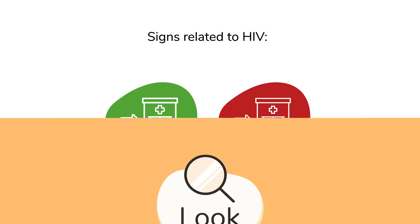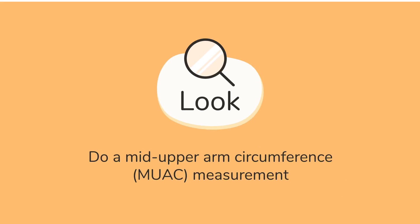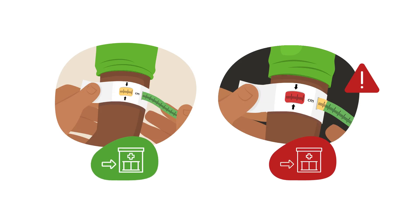Then, do a mid-upper arm circumference, or MUAC, measurement. If the child's result is either yellow or red, it may indicate malnourishment due to HIV. Refer the child to a health facility for further assessment.